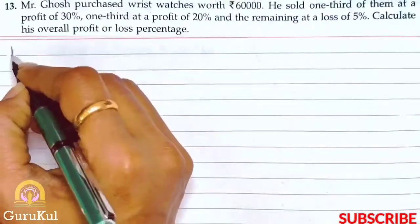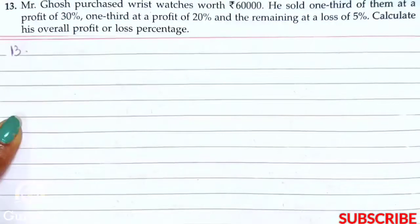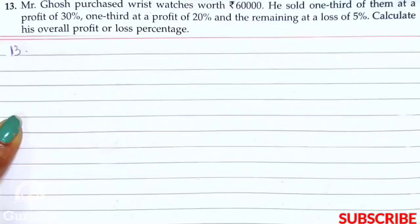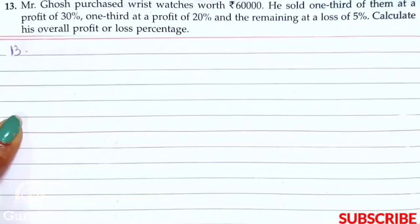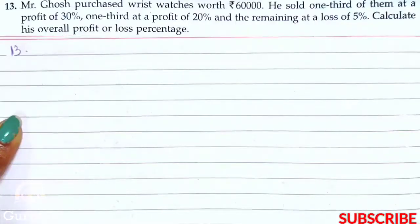Now question number 13. Mr. Ghosh purchased wristwatches worth rupees 60,000. He sold one third of them at a profit of 30%, one third at a profit of 20%, and the remaining at a loss of 5%. We need to calculate his overall profit or loss percentage.